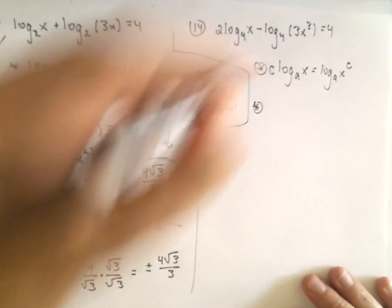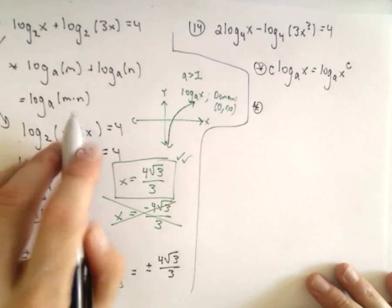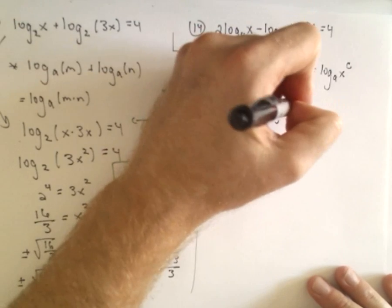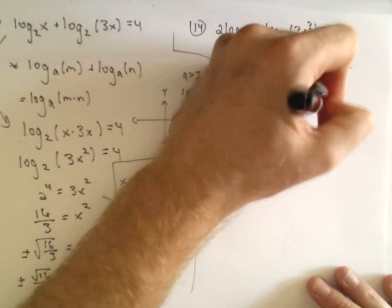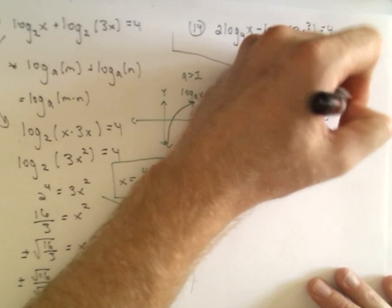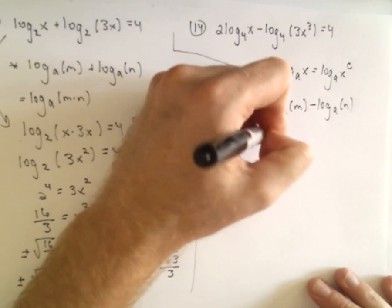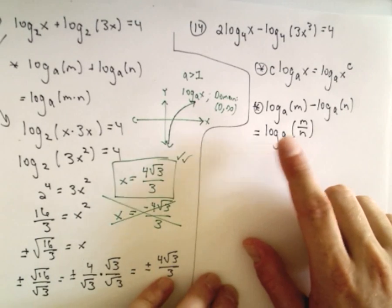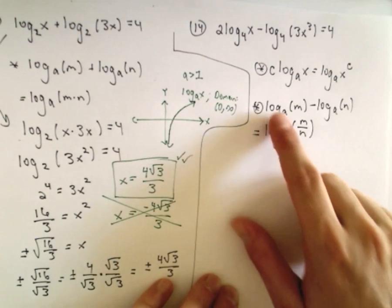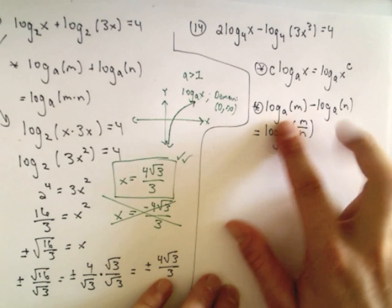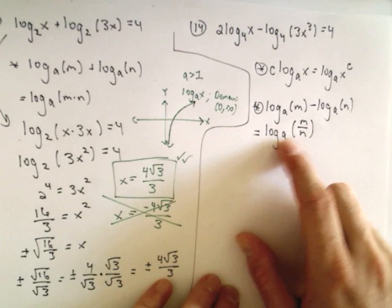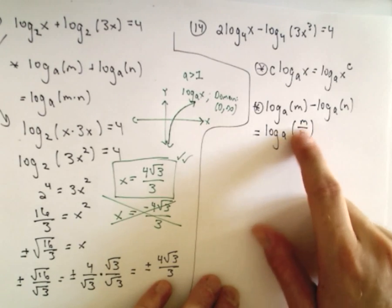And then the other property is, okay, so addition turns into multiplication. Subtraction turns into division. And again, notice it groups into a single logarithm. So you had two logarithms with the same base. There's a minus in between. You have a logarithm with the same base, but now it is division.